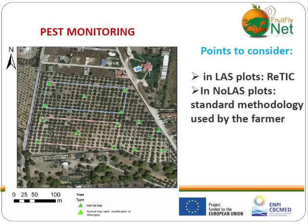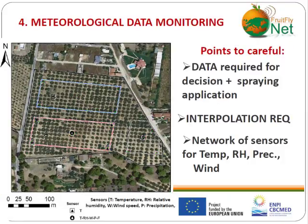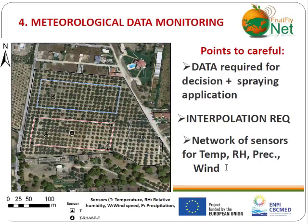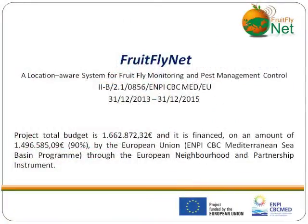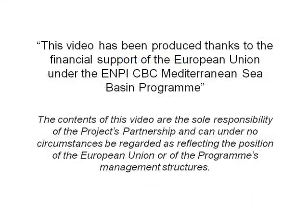Meteorological data monitoring was based on sensors established across the plots. In the LAS plot, 5 sensors for temperature and 5 for relative humidity were established, along with one central sensor for precipitation and wind speed. These two parameters — precipitation and wind speed — are important during the spray application process.